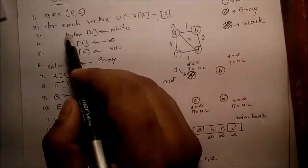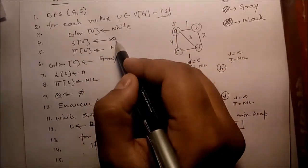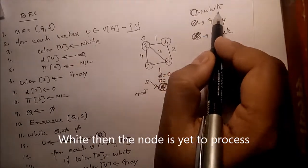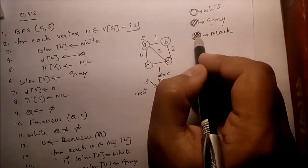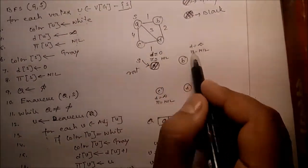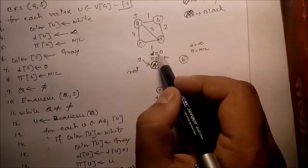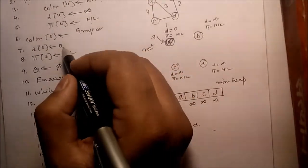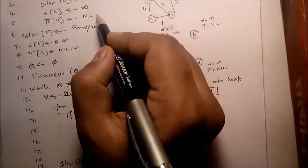For each vertex U except the starting node: color of U is equal to white, D of U is equal to infinite, pi of U is equal to nil. If color is white then the node is untouched or unprocessed. If gray, processing is going on. If black, processing is finished. D stores distance information — distance from the starting node.